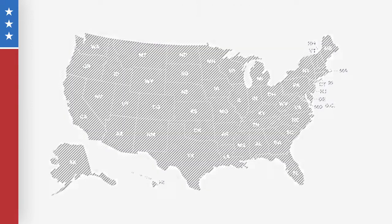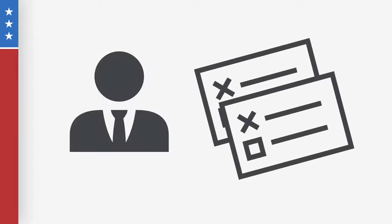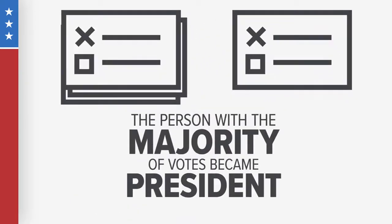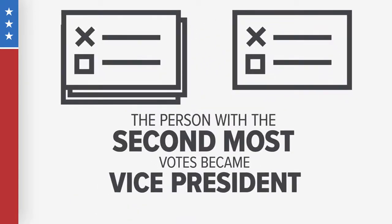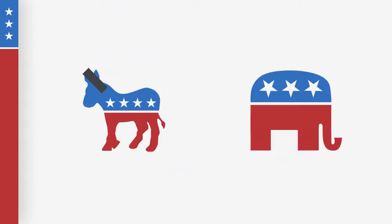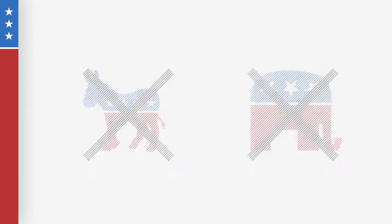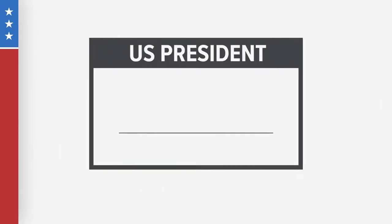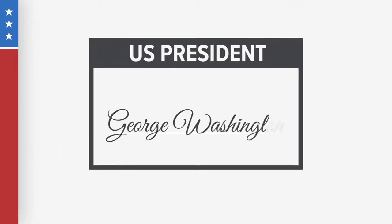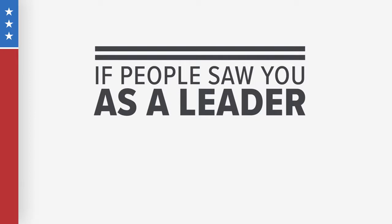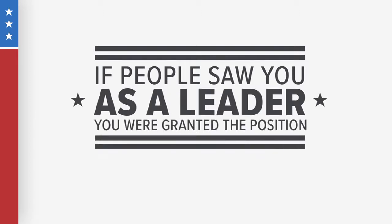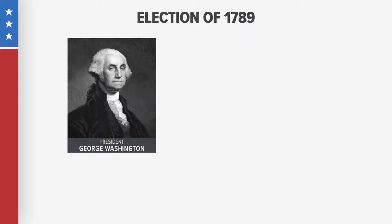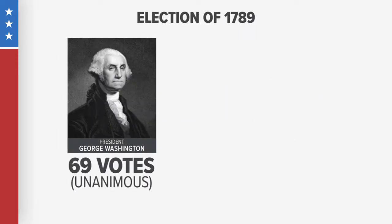Here's how it worked. Each elector received two votes. The person with the majority of votes became president, and the person with the second most became vice president. Forget about political parties and massive campaigns — President George Washington was summoned to serve. Think of it as one big write-in ballot. If people saw you as a leader, you were granted the position. It was no contest in 1789; the Electoral College unanimously voted for President Washington.